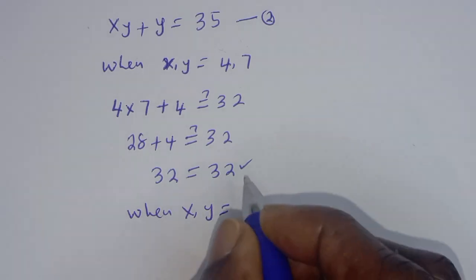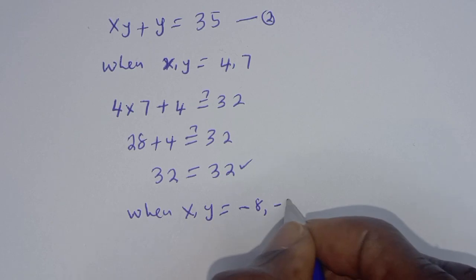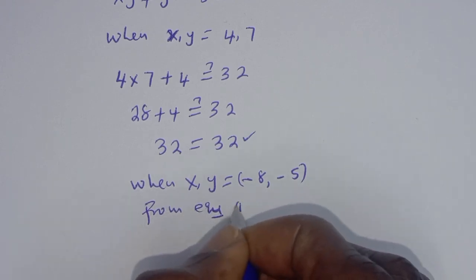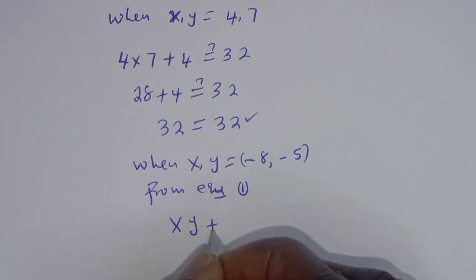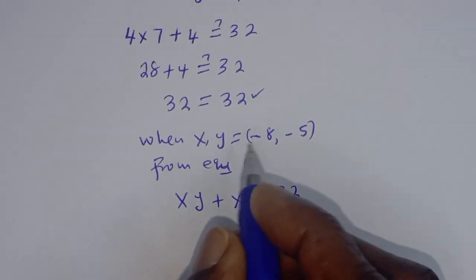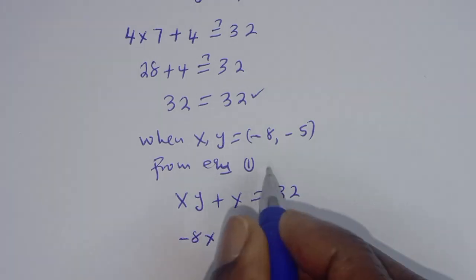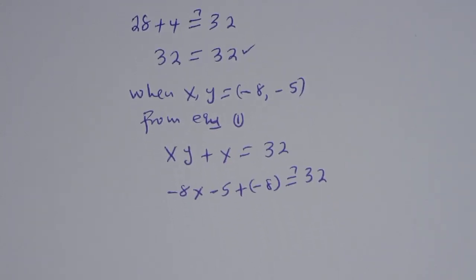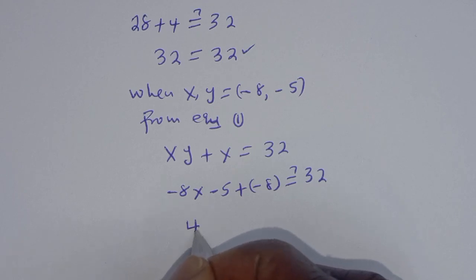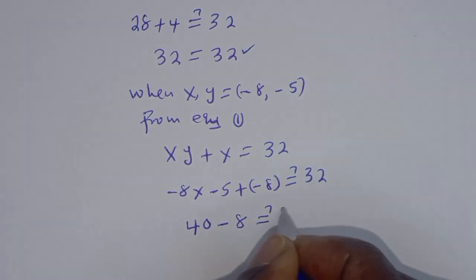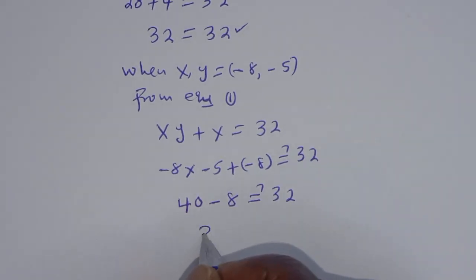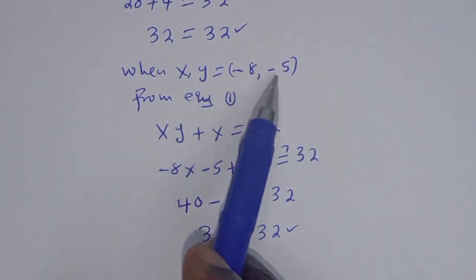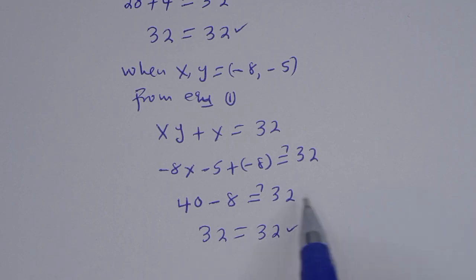Now when (x, y) equals (negative 8, negative 5): xy plus x equals 32 gives (negative 8) times (negative 5) plus (negative 8) equals 40 minus 8 equals 32, which is also true. If you enjoyed the video, please don't forget to like, share, comment and subscribe. Bye bye!